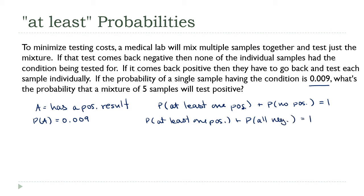What's that mean, all negative? That means the first one is negative, and the second one is negative, and the third one, and the fourth one, and the fifth one. I'm interpreting this as an and probability. This is the probability at least one positive plus the probability negative and negative and negative, all five.